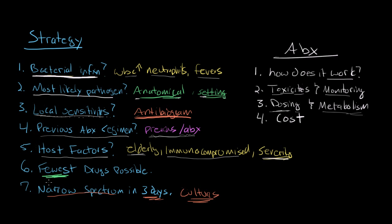After going through the first five steps, step six is fairly self-evident but worth pointing out: you want to pick a regimen that uses the fewest drugs possible. We use antibiotics to help people, but all drugs have side effects, complications, and can interact with each other. So if you have multiple options, you want to go with the option that lets you use the fewest number of drugs.